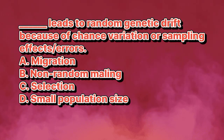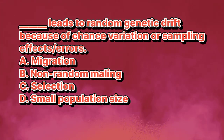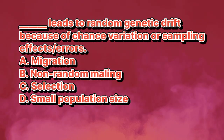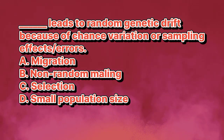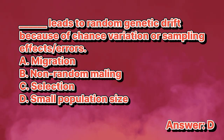Blank leads to random genetic drift because of chance variation or sampling effects or errors. A. Migration. B. Non-random mating. C. Selection. D. Small population size. The answer is letter D.